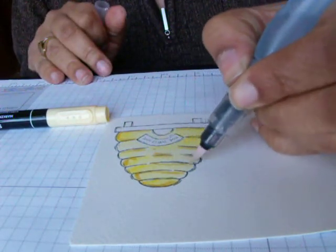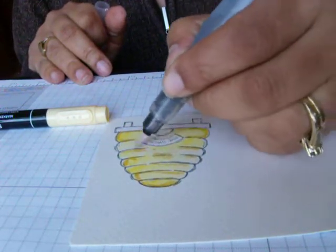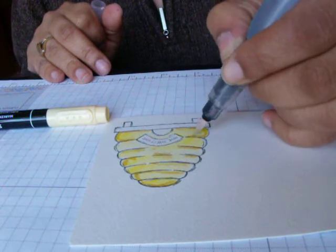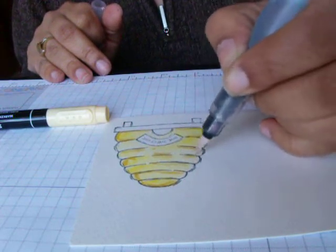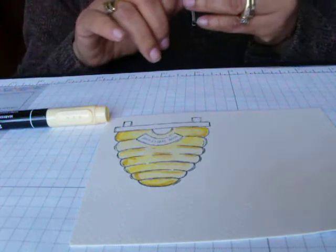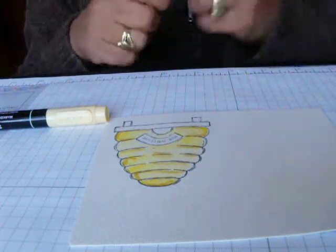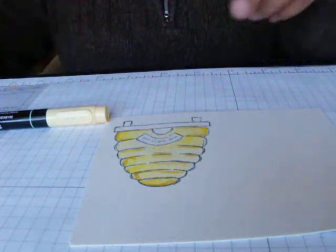So now what I do is just grab the watercolor brush and pull some color. As you can see, it gives me the highlights that I want. Now we're going to use Chocolate Chip.